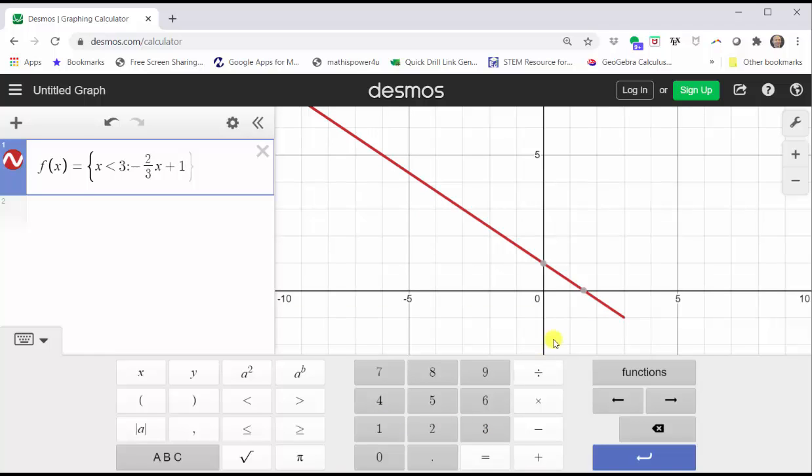Looking at the graph, notice how we do have the graph of negative 2/3x plus one when x is less than three. But notice when x is equal to three, it looks like there's a point at three comma negative one, but we know three is not in this interval, and therefore, we'll have to come back later and plot an open point or open circle as this endpoint.